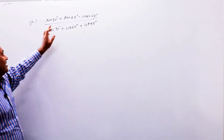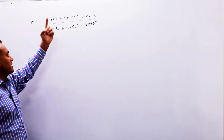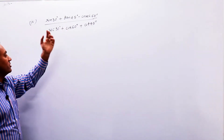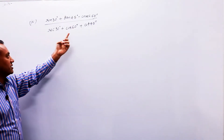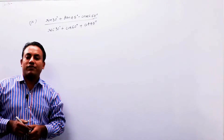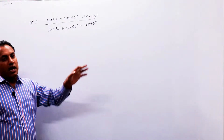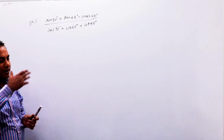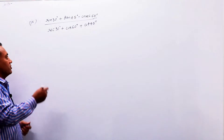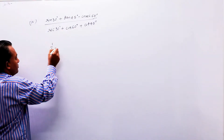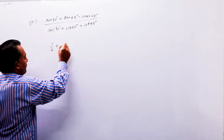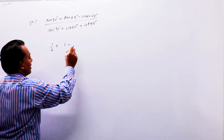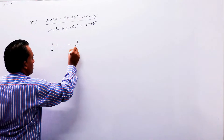4th part: sin 30° plus tan 45° minus cos x 60° upon sec 30° plus cos 60° plus cos 45°. आपको इनकी values पता हैं तो आप इस question को कर पाएंगे। तो value रखना शुरू करते हैं — sin 30° = 1/2, tan 45° = 1, और cos 60° = 1/2, sec 30° = 2/√3।